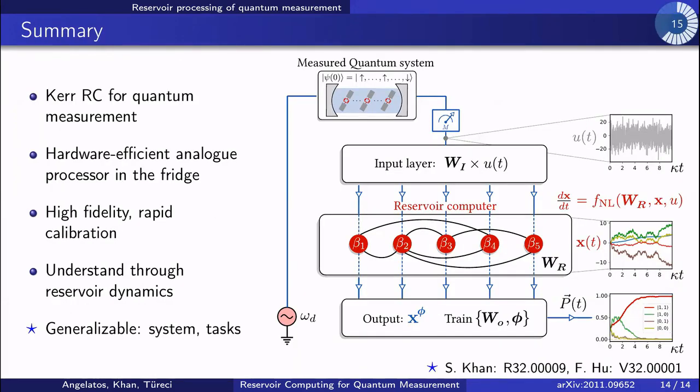To summarize, I introduced a hardware-efficient analog processor for quantum measurement based on a Kerr network reservoir computer. I showed that this reservoir computer enabled high fidelity and rapid calibration of non-ideal measurement signals and developed an understanding of these results and how to design reservoir computers by exploring the dynamics of the reservoir itself. This Kerr network approach can be applied to other tasks, such as we've considered in other works. And thank you for listening.